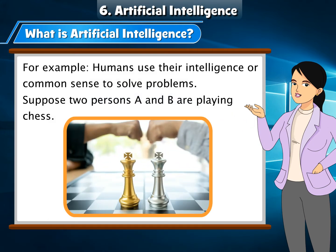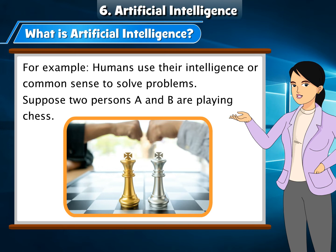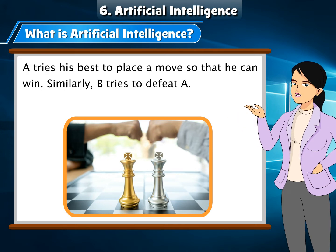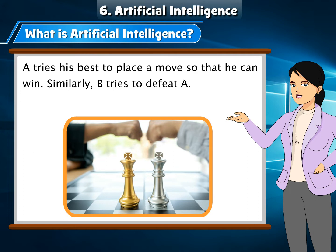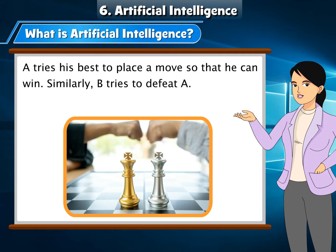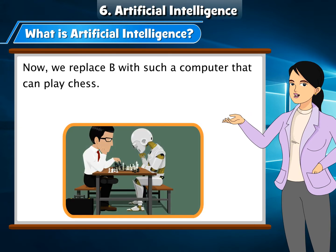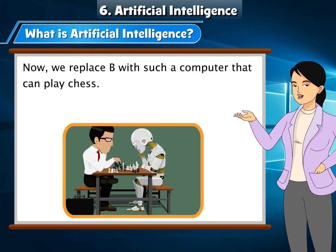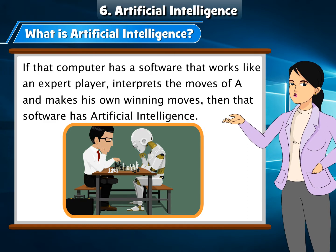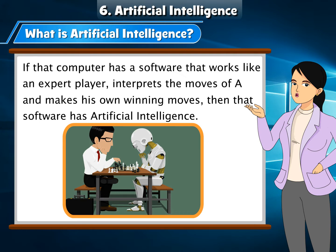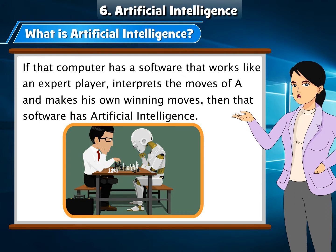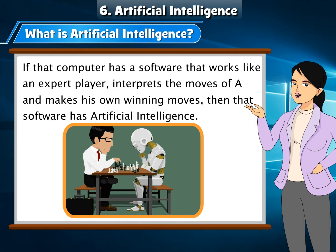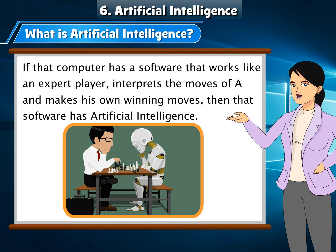Suppose two persons, A and B, are playing chess. A tries his best to place a move so that he can win. Similarly, B tries to defeat A. Now we can replace B with a computer that can play chess. If that computer has software that works like an expert player, interprets the moves of A, and makes its own winning moves, then that software has Artificial Intelligence.